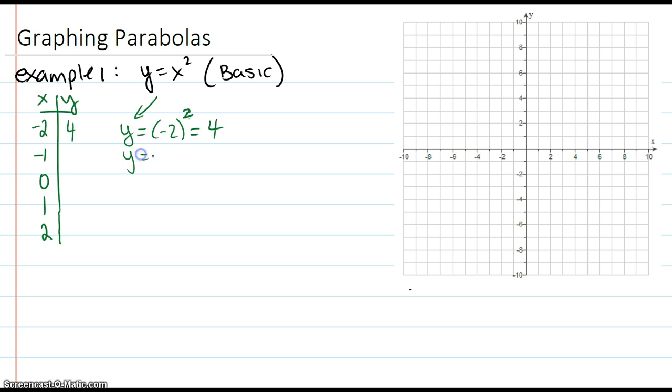Plugging in negative 1 is 1, negative 1 times negative 1. Plug in 0, plug in 1, and finally plug in 2, all from this formula up there.